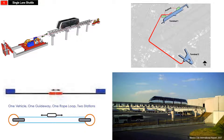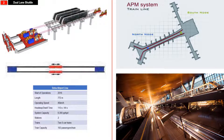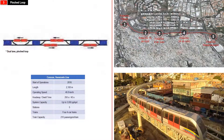The single lane shuttle is the most basic configuration, consisting of a train set that goes back and forth on a single lane. The double lane shuttle uses two train sets with their respective tracks, going back and forth on two separate lanes. The pinched loop configuration uses several haul rope loops which adjoin and overlap one another at the stations — the train switches between the haul ropes, creating a synchronized circular flow of trains. An example of a pinched loop configuration is in Caracas, Venezuela.